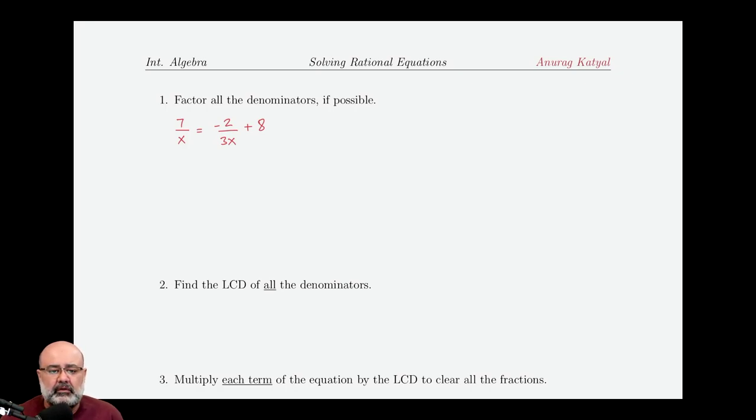All righty, let's look at this equation. We have 7 over x equals negative 2 over 3x plus 8. So here are the steps again for solving rational equations. We factor all the denominators if possible. Both of these are monomials, meaning it's just one term, so can't factor them. So we move on to step 2.